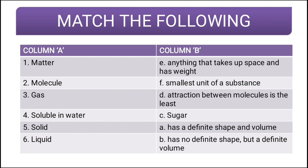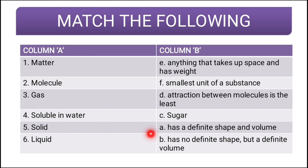So the answers are: matter — anything that takes up space and has weight; molecule — smallest unit of substance; gas — attraction between molecules is least; soluble in water — sugar; solid — has definite shape and volume; liquid — has no definite shape but definite volume. Our answers were correct, and these are the basic definitions by which we identify these particular terms.